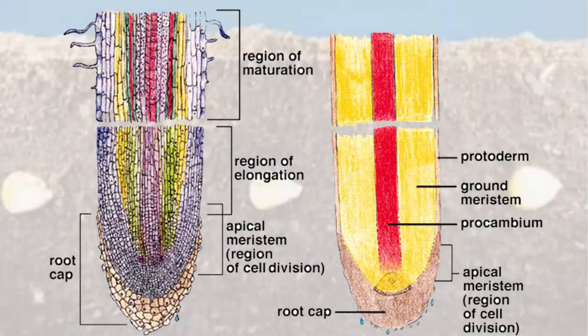Let's have a longitudinal section of a dicot root to identify three prominent zones that result from the continuous addition of cells from the meristematic tissues at the tips.